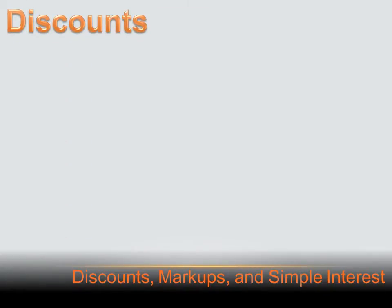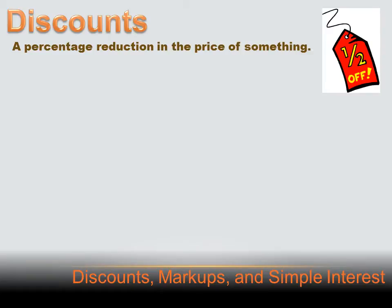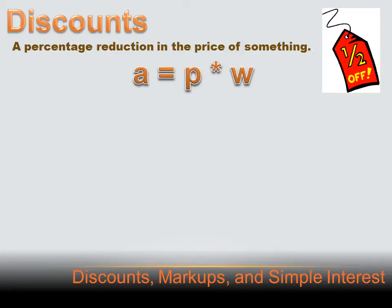Discounts. You know what discounts are — it's a percentage reduction in the price of something. If you go to the grocery and apples are normally a dollar, but today they're 50% off, you're only going to pay 50 cents per apple. We can figure that out using the percent equation. The percent equation is: A, a portion, equals the percentage P, times the whole W. In a discount problem, A equals the dollar amount of the discount, P equals the percentage of the discount, and W equals the original price.